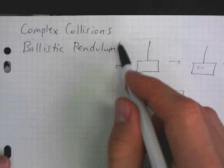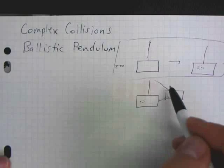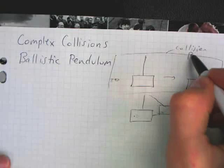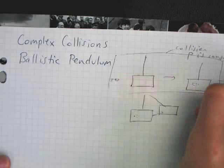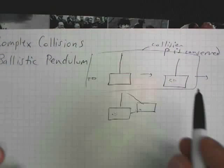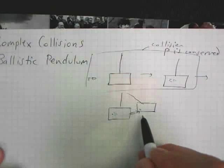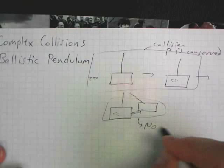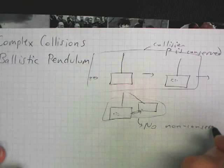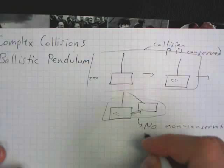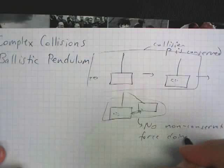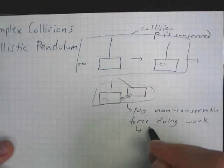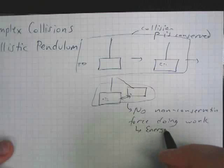So, for this part, when the bullet enters the block, this is a collision. And therefore, momentum is conserved. Over here, as the block swings upward, in this scenario, there are no non-conservative forces acting. There are no non-conservative forces doing work. And therefore, for this part of the motion, energy is conserved.